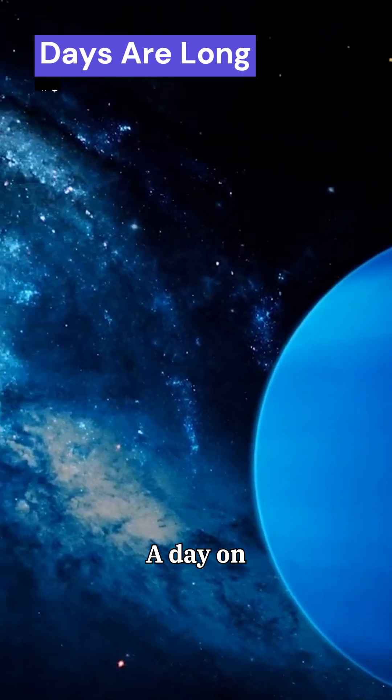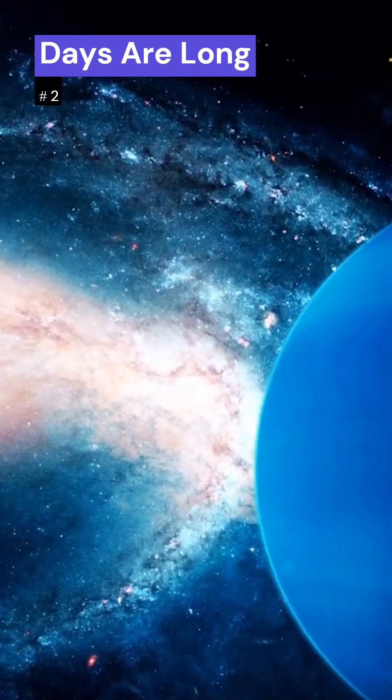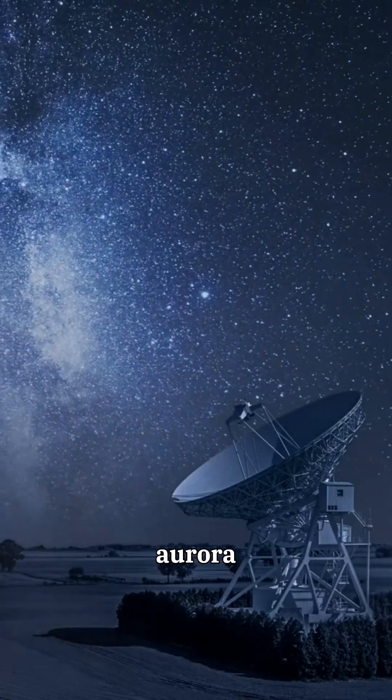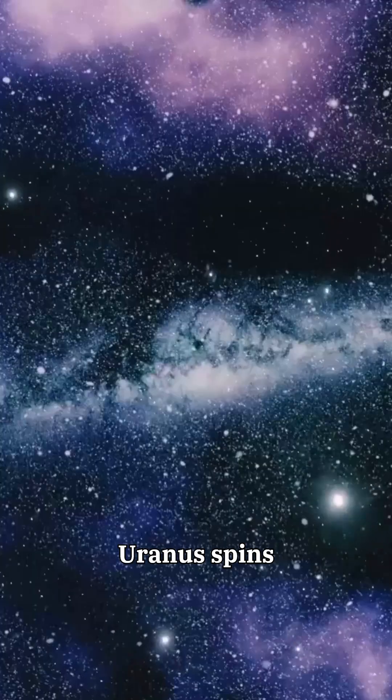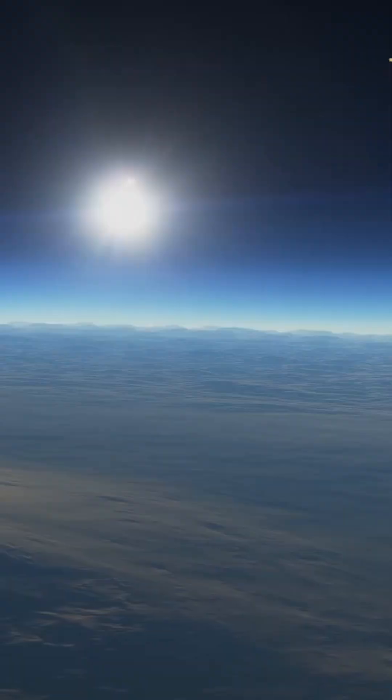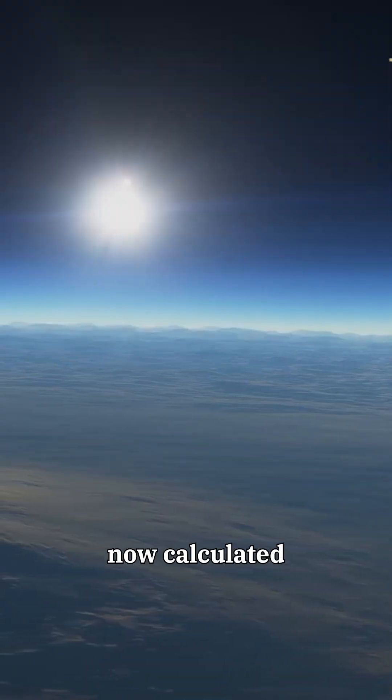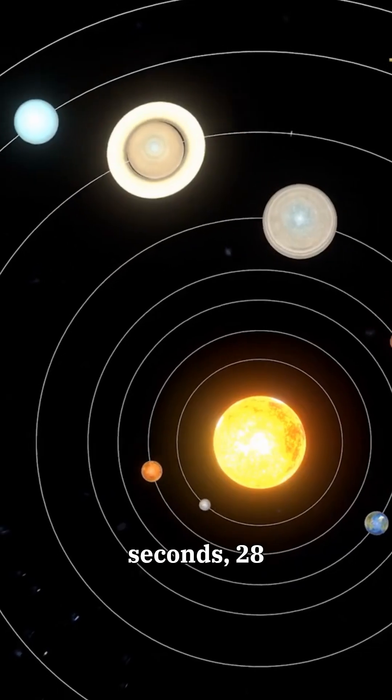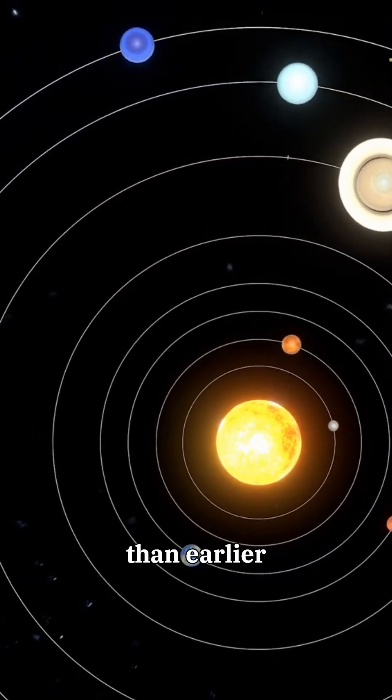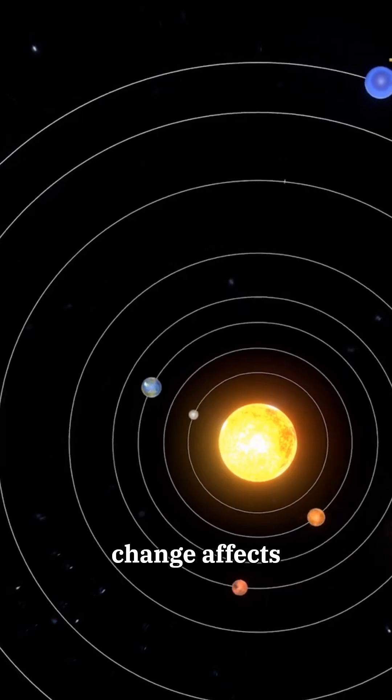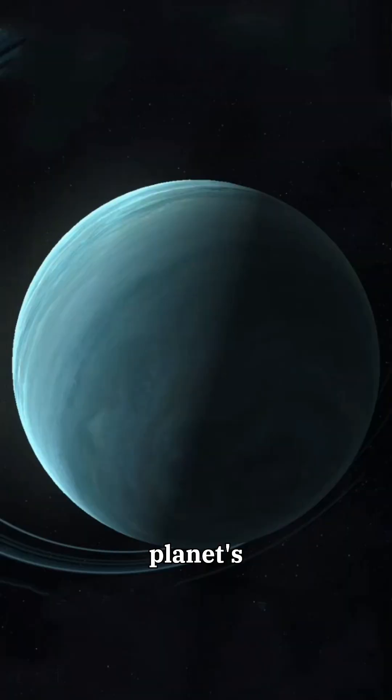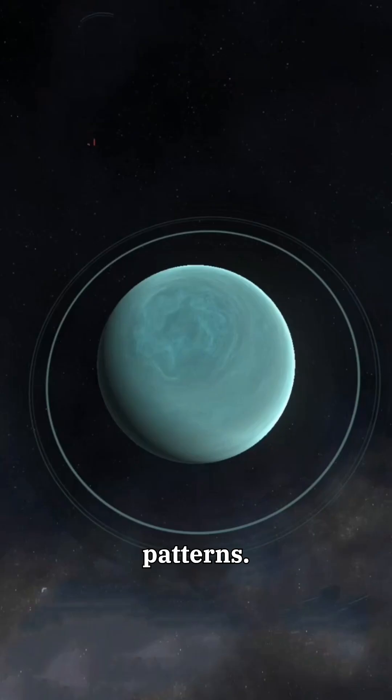Fact number 2. A day on Uranus is longer than we thought. In 2025, Hubble's aurora tracking showed that Uranus spins just a little slower than we thought. One full Uranian day is now calculated at 17 hours, 14 minutes, and 52 seconds, 28 seconds longer than earlier estimates. That tiny change affects how scientists model the planet's interior, magnetic field, and even weather patterns.